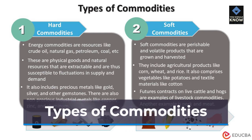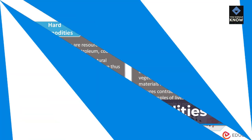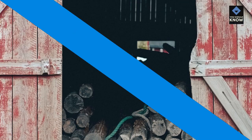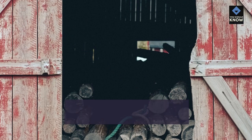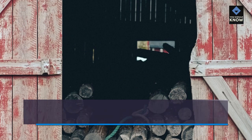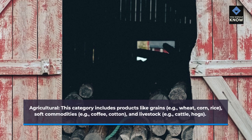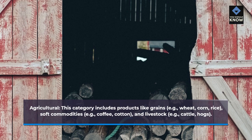Types of commodities. Commodities can be classified into several categories. Agricultural: this category includes products like grains (e.g. wheat, corn, rice), soft commodities (e.g. coffee, cotton), and livestock (e.g. cattle, hogs).